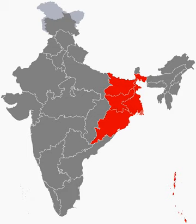The modern state of Odisha was known as Kalinga, Odra Desha and Utkala in ancient times. It was ruled by indigenous rulers of the Mahamagavahana dynasty, Eastern Ganga dynasty and Gajapati dynasty. Odia language is one of the classical languages of India. Odisha's classical dance Odisi and classical music Odisi music are also well known in India.